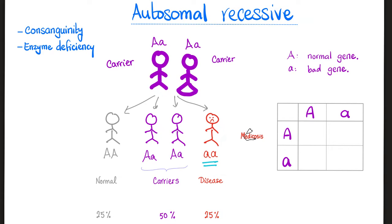Cystinosis is an autosomal recessive disease, which means mommy is a carrier, daddy is a carrier, and then 25% of the offspring are normal, half of them are carriers — they do not show symptoms of the disease but carry the bad gene — and 25% of the offspring have the disease. Anytime you hear autosomal recessive, we think of consanguinity, meaning people who marry their relatives. You tend to find autosomal recessive diseases clustering in small communities throughout the world.